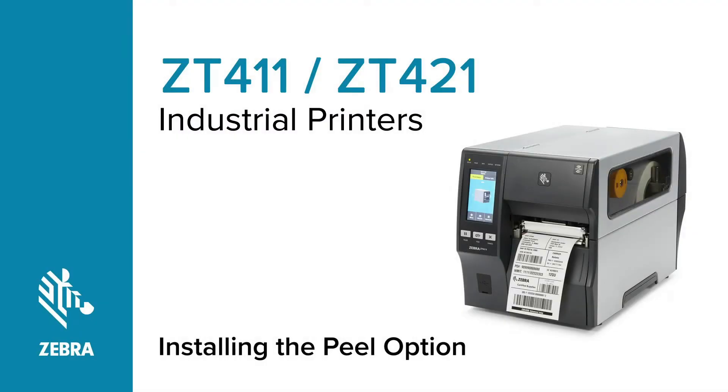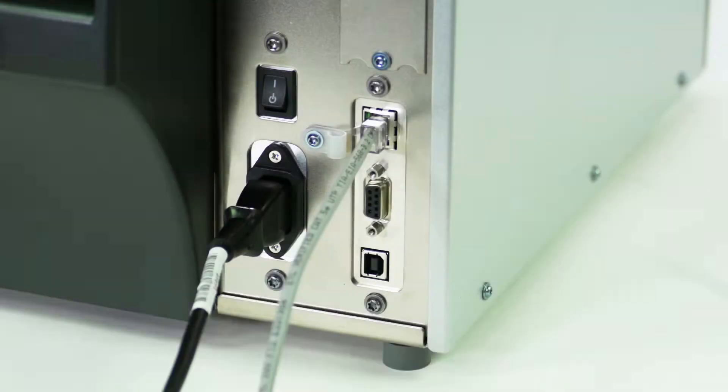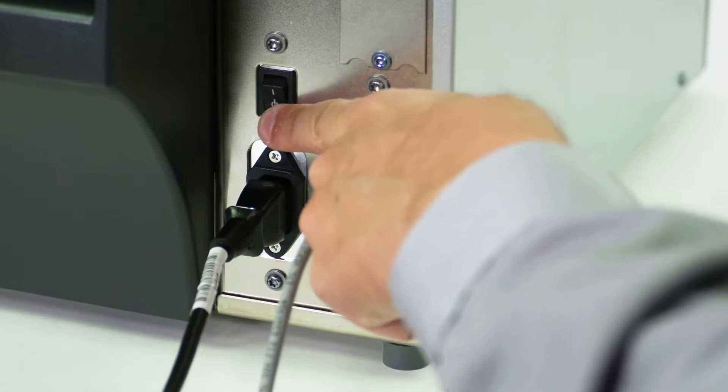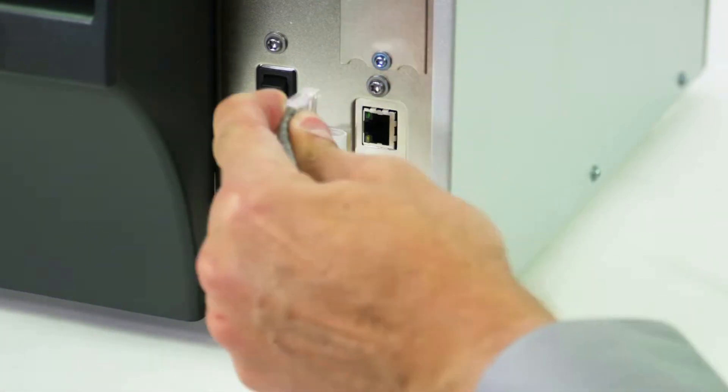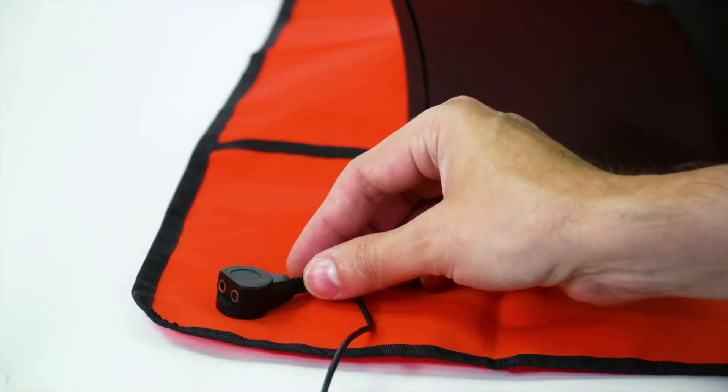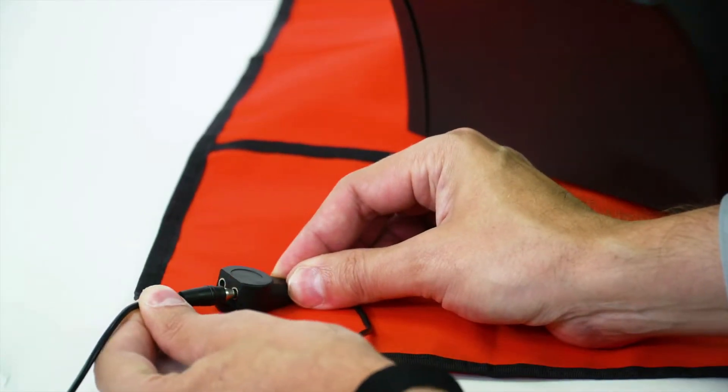Installing the PL option on a ZT411 series printer. Turn off the printer and disconnect the power cord and data cables. Connect yourself to an anti-static device. Place the printer on a grounded anti-static mat.